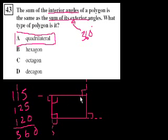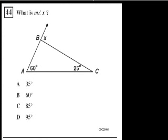In a quadrilateral you have 90 plus 90 plus 90 plus 90, which adds up to 360 degrees. Problem 44. What is the measure of angle x? This is an exterior angle to vertex B. There's a fast way and a slow way. The slow way is to figure out the interior angle at B, knowing the triangle's angles sum to 180.